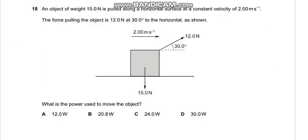Question number 18 says an object of weight 15 N is pulled along a horizontal surface at a constant velocity of 2 meters per second. The force pulling the object is 12 N at 30 degree to the horizontal as shown. What is the power used to move the object? We must know that the formula for power is power equals force into velocity.